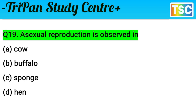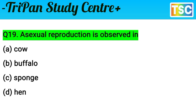Next question on your screen: Asexual reproduction is observed in — A) Cow, B) Buffalo, C) Sponge, D) Hen. Cow and buffalo are the same category of animals — they do not undergo asexual reproduction. Hen also does not. Only option C remains: sponge. Asexual reproduction is observed in sponge. C option is correct.